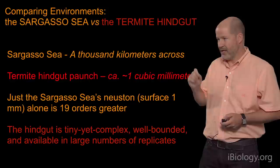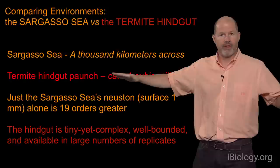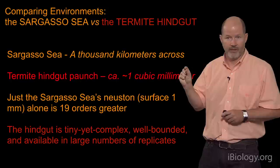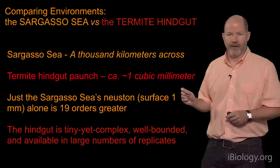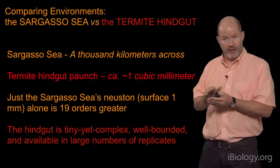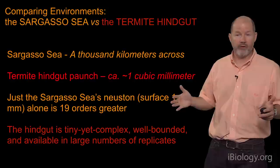The termite hindgut is only about one cubic millimeter in volume, and yet it contains hundreds of microbes you find nowhere else in nature. Just taking the top millimeter of the Sargasso Sea across those thousands of kilometers gives a volume 19 orders of magnitude greater than one termite. So we can actually bring a termite into the laboratory and study an entire environment. The hindgut is tiny yet complex — many hundreds of species, some yet unstudied — and it is well-bounded by the gut lining and the outside of the termite.